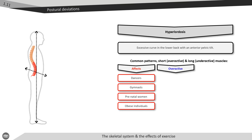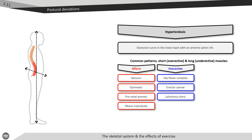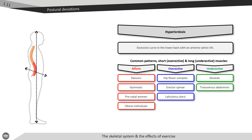The overactive muscles which become short and tight in hyperlordosis include the hip flexor complex, erector spinae group, and latissimus dorsi. The underactive muscles which become lengthened and weakened include the gluteals, transversus abdominis, and the internal obliques.